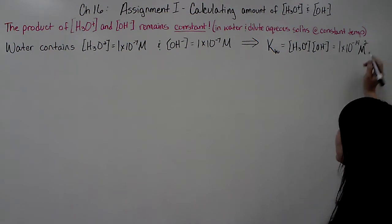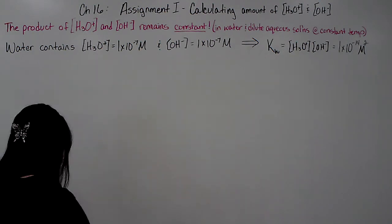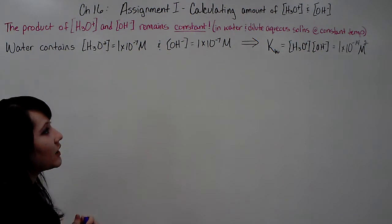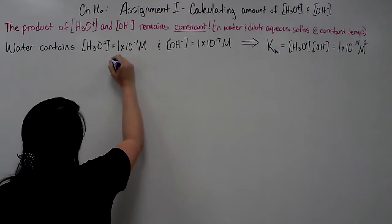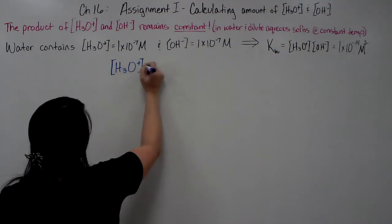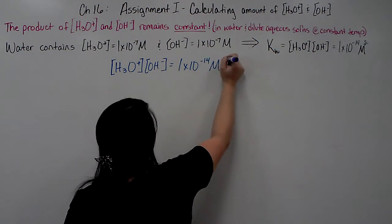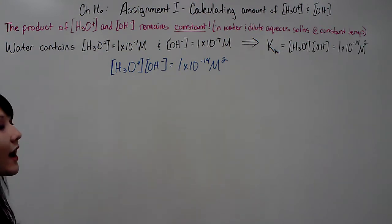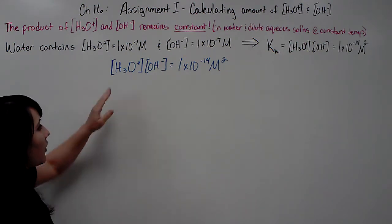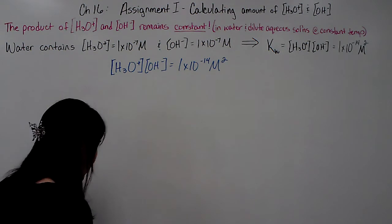The units are molarity squared because it's molarity times molarity. This constant is labeled Kw, the ionization constant of water, where Kw = [H₃O⁺][OH⁻] = 1×10⁻¹⁴ M². This equation is used to find how much hydronium and hydroxide are in a solution. If you know one concentration, you can plug it in and solve for the other.